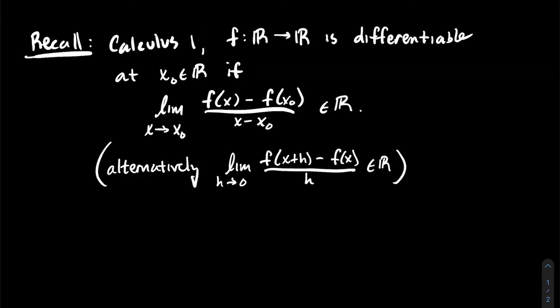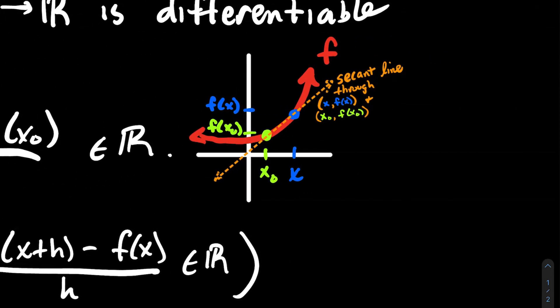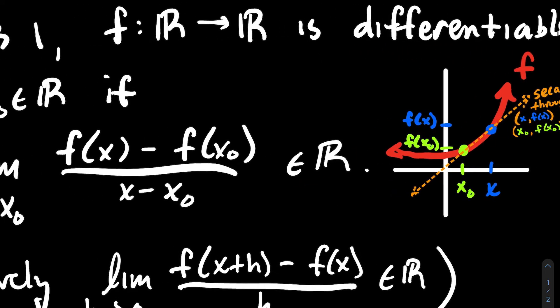Let me give you some visual intuition for what the derivative does. If I visualize that difference quotient, I've got my function f in red, and I'm picking x₀ as the special point. I pick a value x close to it, plot the two points when I plug in x₀ and x, and draw the line connecting them — that's the secant line through those two points.